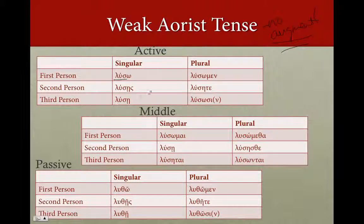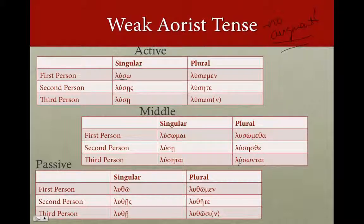Luso, lusace, lusace, lusome, luseta, lusose. And in the middle: lusomai, lusae, lusetai, lusomatha, lusace, lusontai. Same endings you added for the present, but now just on to the aorist stem.